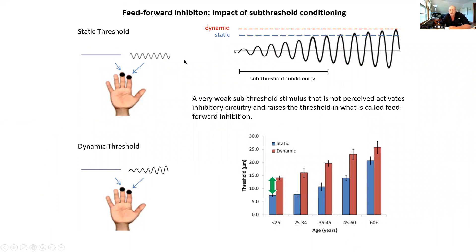One way that we measure it is really the easiest way to describe what feedforward inhibition is. If we do what we call a static threshold test — where we deliver a really small stimulus and try to figure out what's the smallest stimulus someone can feel — we get a bunch of values for different age groups. You can see what's in blue is the static threshold, the minimum stimulus that you can perceive on the skin. It's going up with age because skin physiology degrades with age, and everybody in the world has published this.